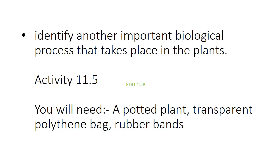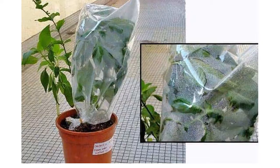Here you have to do an activity to identify transpiration. You will need a potted plant, a transparent polythene bag, and rubber bands. First of all, you have to cover a branch of the plant using a polythene bag. Then observe after one hour. You can see there are droplets inside the polythene bag.